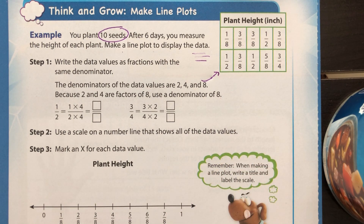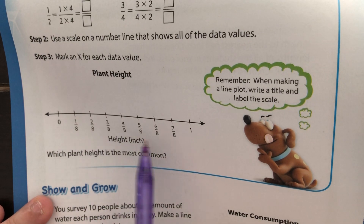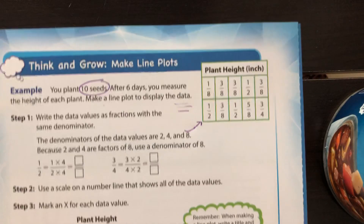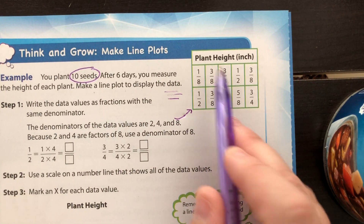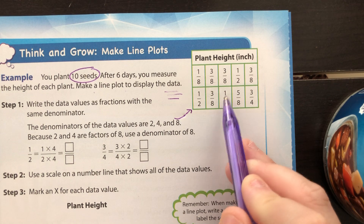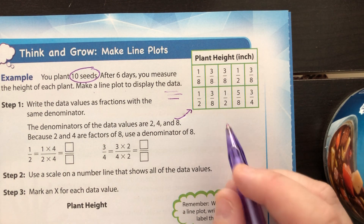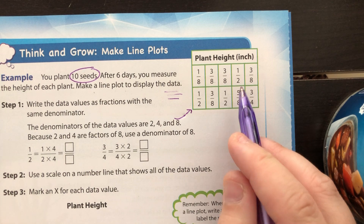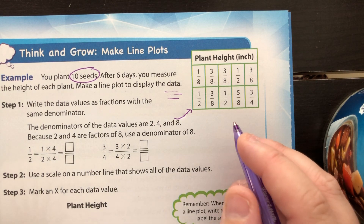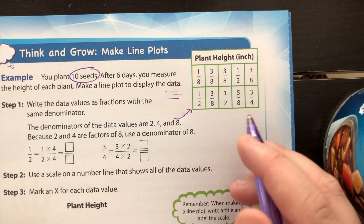One of the first things I'm going to show you is that in your number line, all the fractions down here are in eighths. But the data set — all the fractions together — they don't all have an eight in the denominator. We have to turn those fractions that don't have an eight in the denominator into fractions that do have an eight on the denominator. That's called equivalent fractions: two fractions that look different, but they're actually the same value.